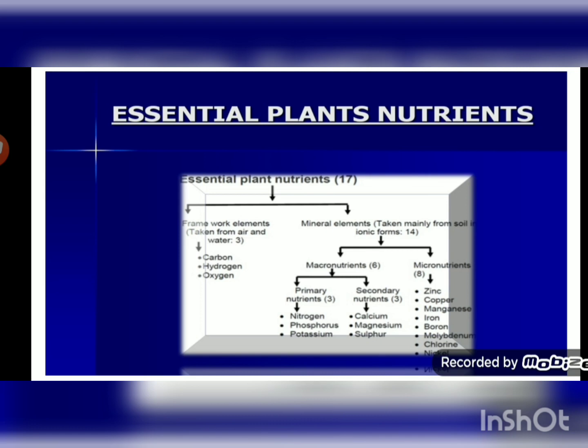There are six nutrients required by plants in large quantity, called macronutrients. Among macronutrients there are two types: primary nutrients and secondary nutrients. Nitrogen, phosphorus, and potassium are required in large amounts, whereas calcium, magnesium, and sulfur are required in slightly lesser amounts. Altogether there are six types of macronutrients provided to plants by soil.